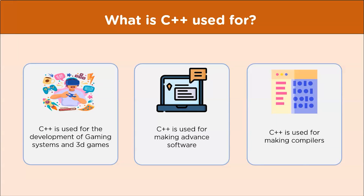Now let's understand what C++ is used for. C++ is able to handle the complexities of 3D games and provides multi-layer networking, making it capable for development of gaming systems and 3D games. C++ is also used for making advanced software applications — for example, Adobe, Spotify, and YouTube have different parts written in C++.